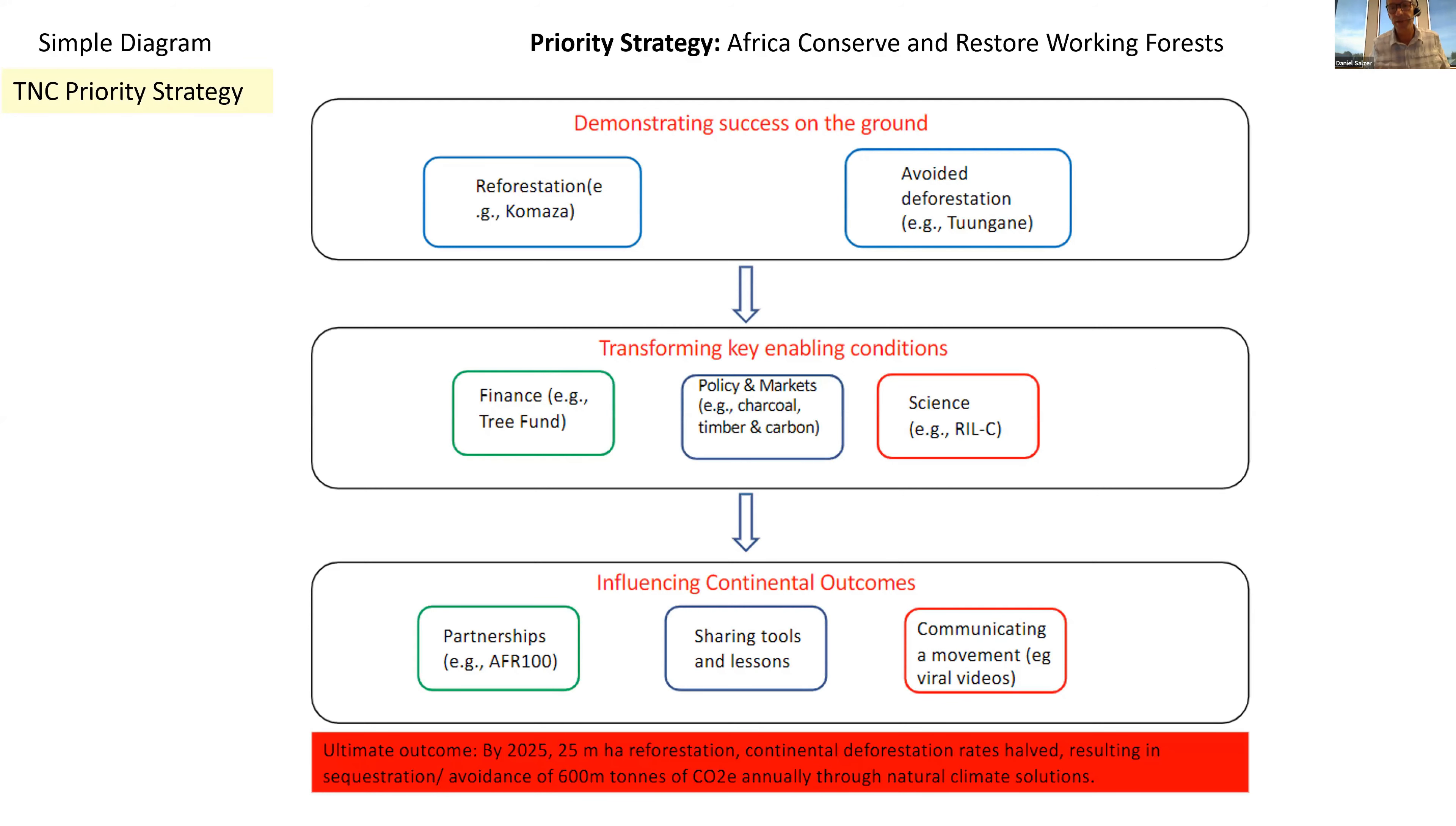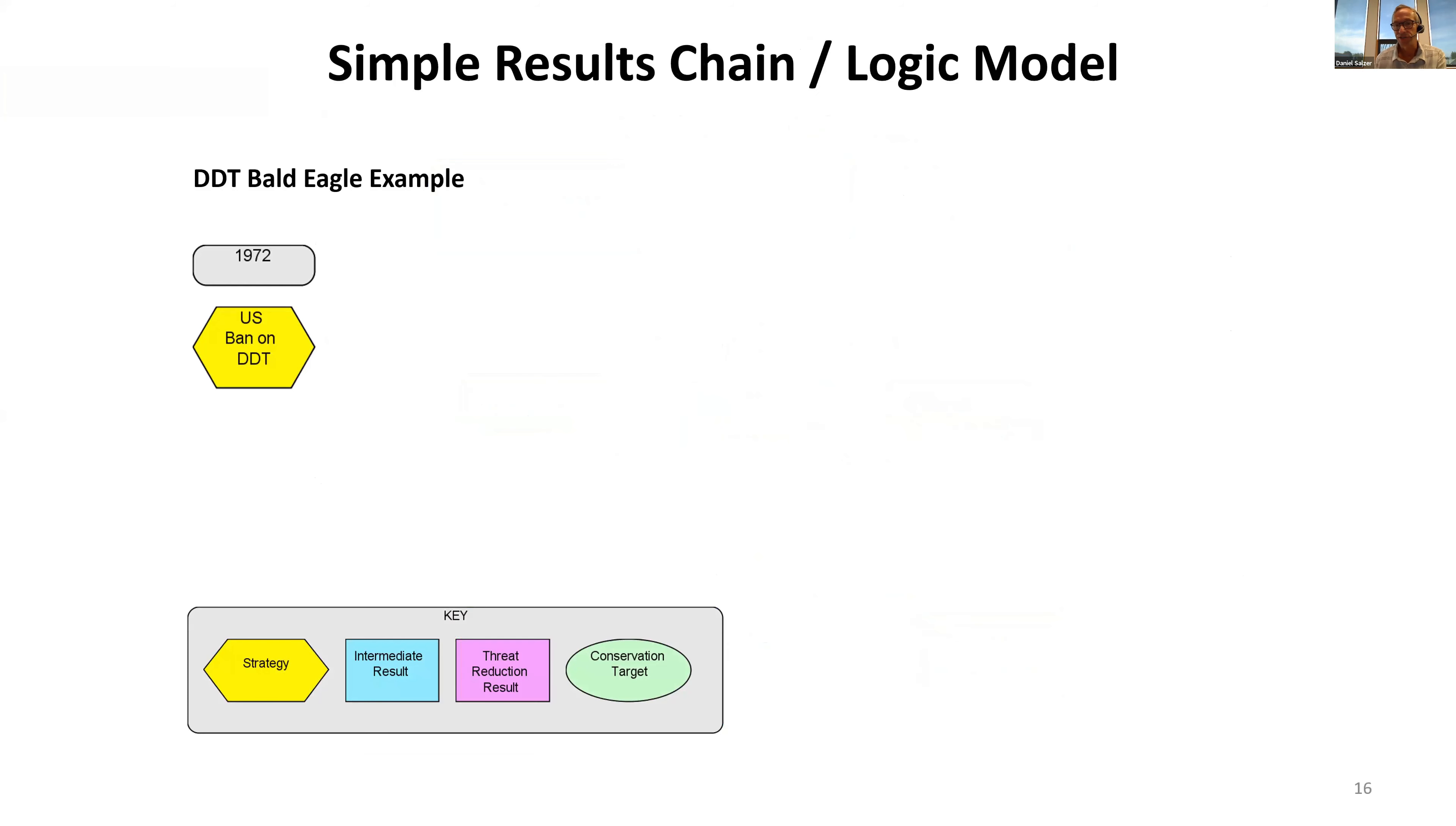Here's an example of a simple diagram approach from a priority strategy in Africa. It captures the theory of change at a very high level. I think they also have some additional products, but this is what's up on the shared conservation hub right now.